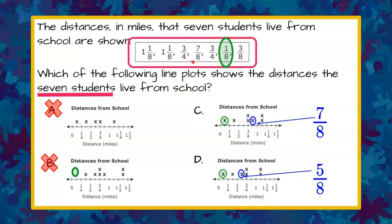One and one-eighth, one and one-eighth, three-fourths, oh seven-eighths is right here. So data from C is on there but five-eighths does not exist in this data so we can rule out choice D.